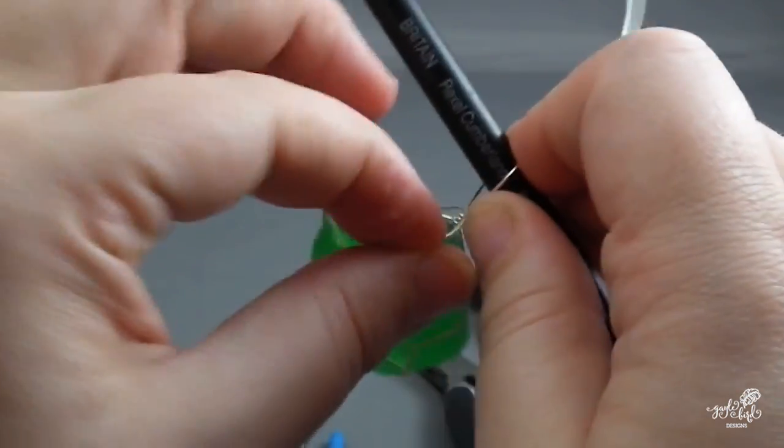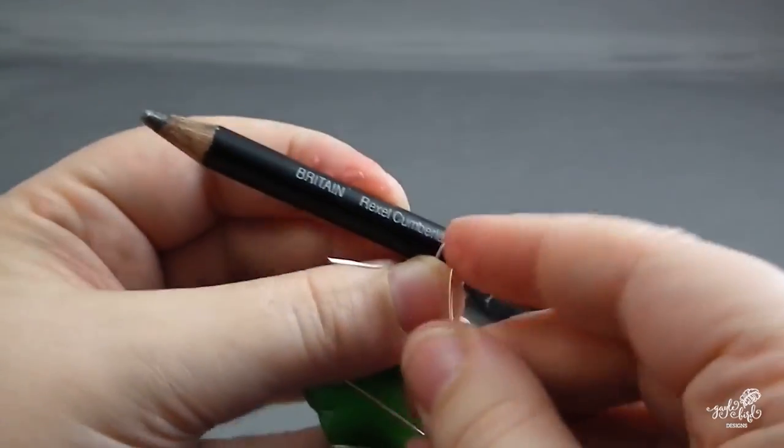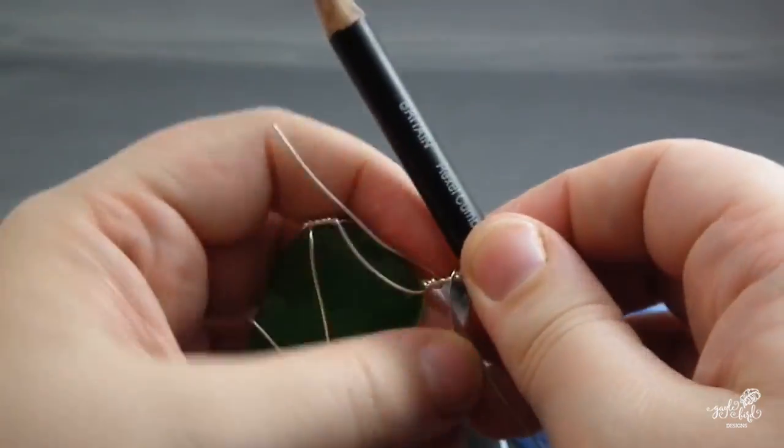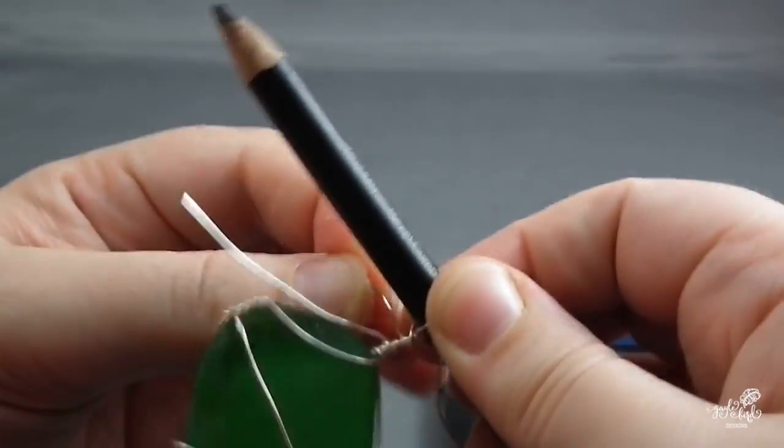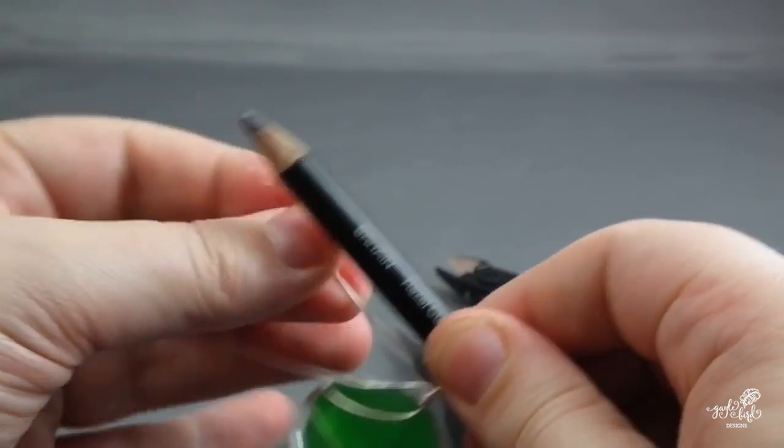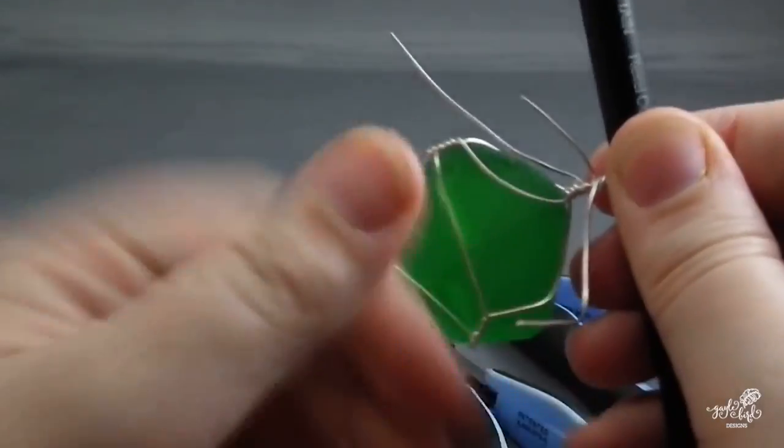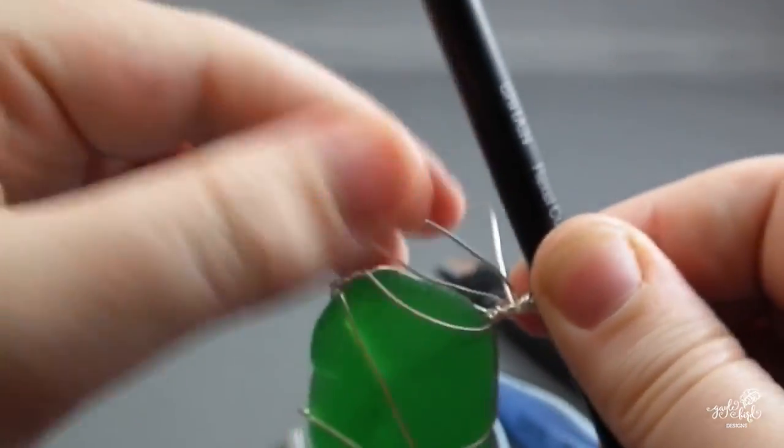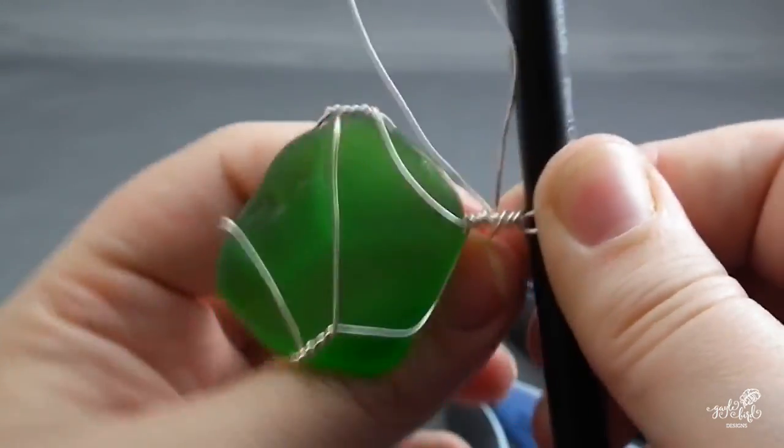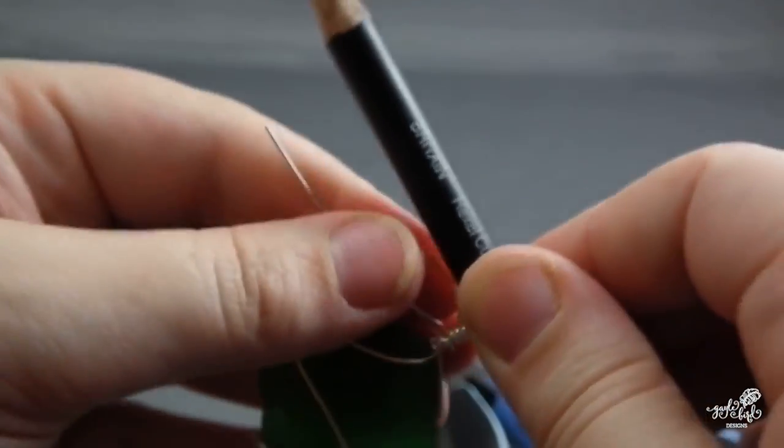Then wrap the two wires around the outside barrel of the pencil. The wires should be going in opposite directions. Without removing the pencil, wrap the ends of the wires around the stem of the bail. This will probably be the final layer of wire, so make them neat and close together. Remove the pencil.